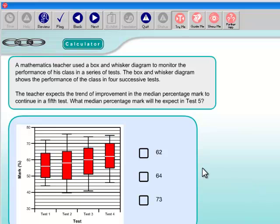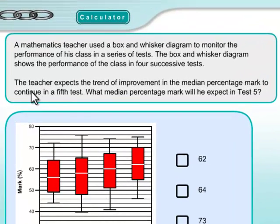You can also be asked about trend information with box plots, and this is an example question of that. So it's the same setup as the previous question, except that now you're asked, the teacher expects the trend of improvement in the median percentage mark to continue in a fifth test. What median percentage mark will he expect in test five?